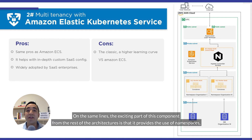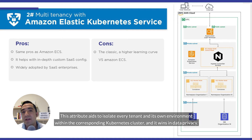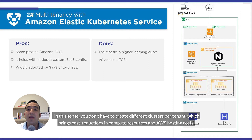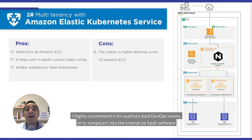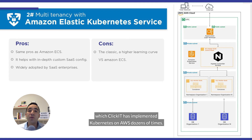On the same lines, the exciting part of this component is that it provides the use of namespaces. This attribute helps isolate every tenant in its own environment within the corresponding Kubernetes cluster, and it wins in data privacy, in the sense that you don't have to create different clusters per tenant, which brings cost reduction in compute resources and AWS hosting costs. I highly recommend it for sophisticated DevOps teams or to jumpstart into the enterprise SaaS software, which Qlikit has implemented Kubernetes on AWS dozens of times.